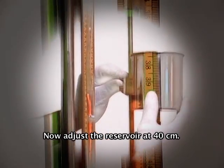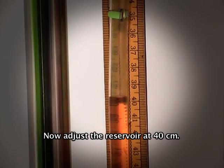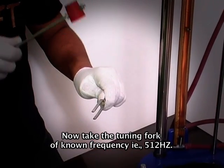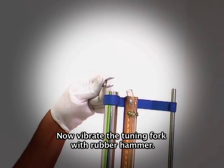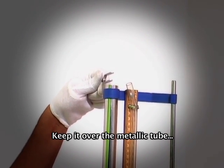Now adjust the reservoir at 40 centimeter. Now take the tuning fork of known frequency. Now vibrate the tuning fork with rubber hammer. Keep it over the metallic tube.